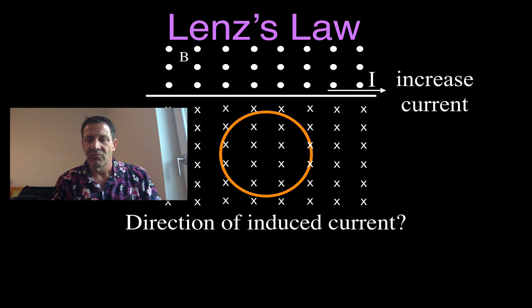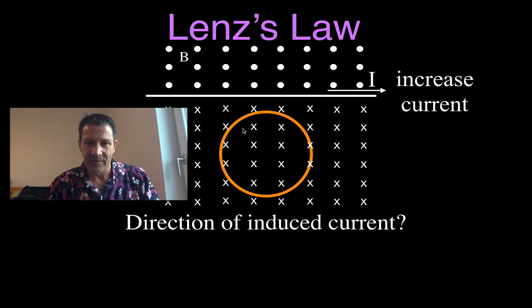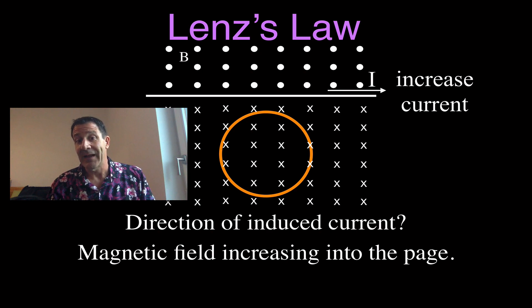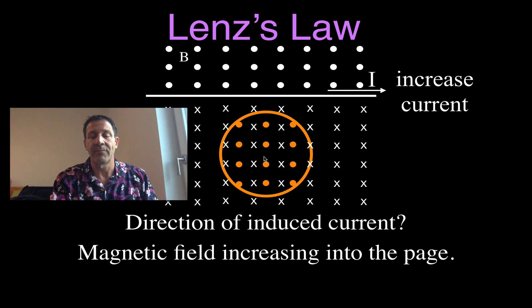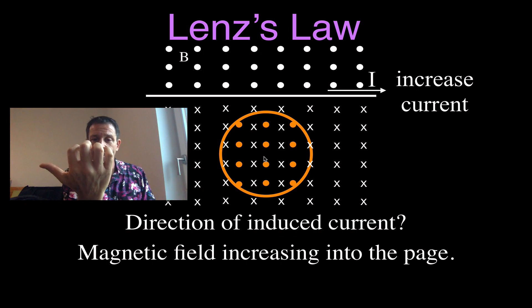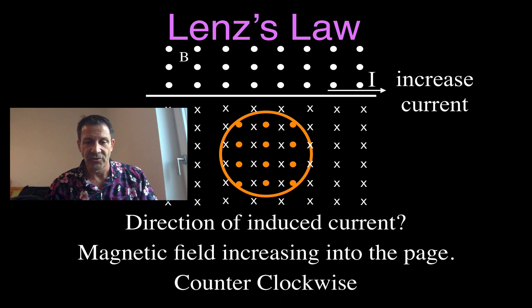Now we say the current is increasing. If we increase the current, the magnetic field strength increases. The magnetic field strength below the wire, where our coil is, is increasing into the page. The coil doesn't like it when the magnetic field is increasing — so it's going to produce magnetic field pointing out of the page. How? It has to produce an induced current in the counterclockwise direction. Imagining holding that coil with fingers pointing out of the page inside, the thumb points in the counterclockwise direction — that is the direction of the induced current.